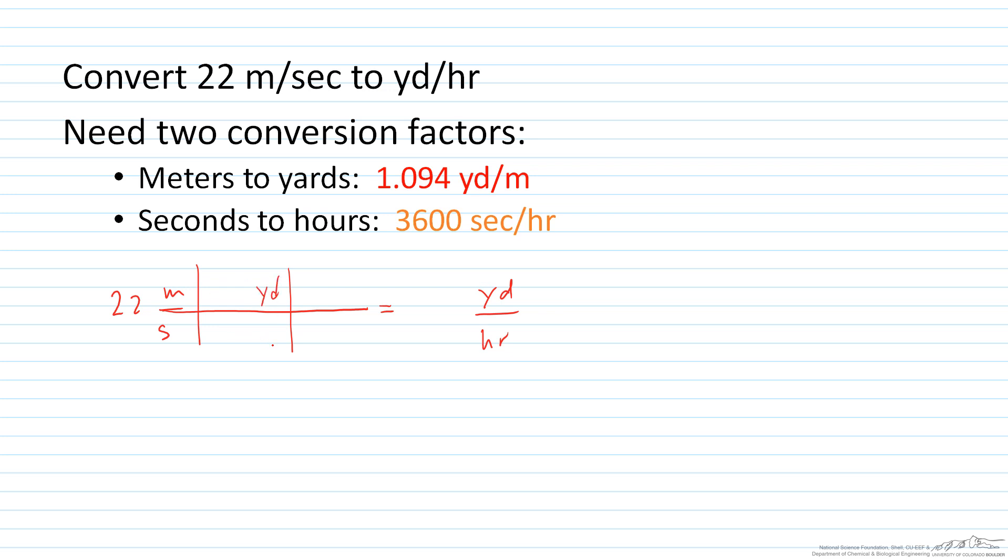Well, I know that I'm going to want a conversion factor yard to meter. And that's given to me. We know that there are 1.094 yards in a meter. So we would have 1.094 yards per one meter. And I also know that I have the seconds in the denominator. So I'm going to have to know seconds in the numerator. And I want hour. And there are 3600 seconds per one hour.